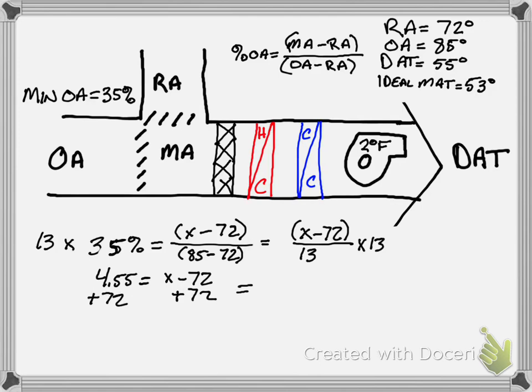And we come up with X or MAT is equal to 76.55 degrees Fahrenheit. And so we know at this scenario that we're going to have to have our cooling coil engaged to reduce the temperature to remove heat from the air handler to get from 76.55 degrees down to 55 degrees. And in a later video we'll show how that heat is removed.